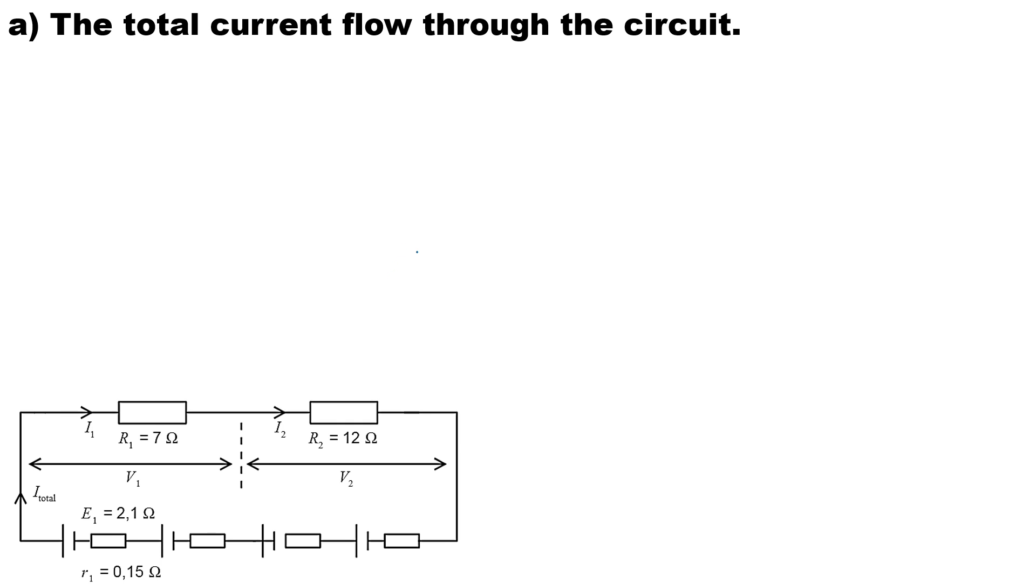In the first question, we need to calculate the total current flow in the circuit. The formula for current in cells and batteries is I = EMF_total / (R + r), where R is external resistance and r is internal resistance. There are a few things we need to calculate to substitute into this formula.